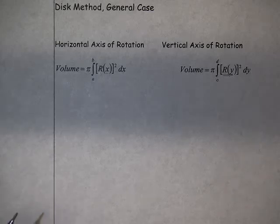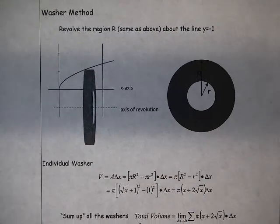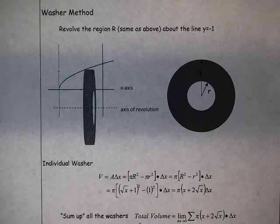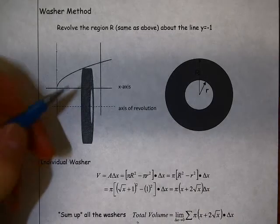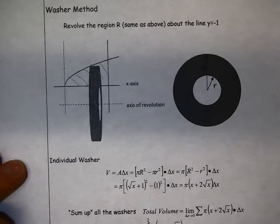That's called the disk method because when we look at those cross sections, each one is a disk. We could also have a situation that requires us to use what's called the washer method. We're going to take the same region R.